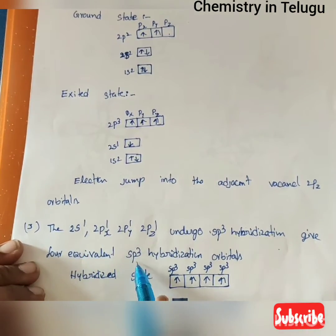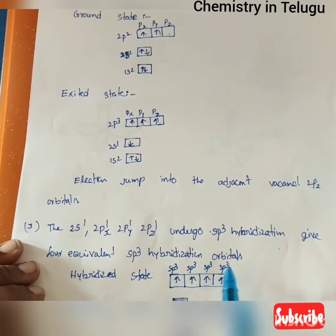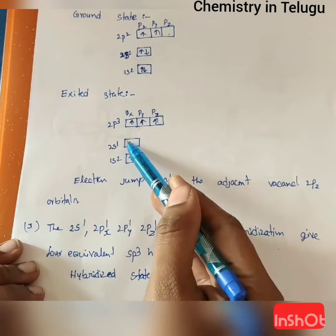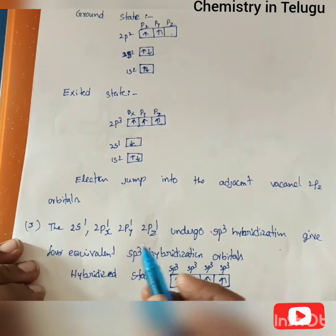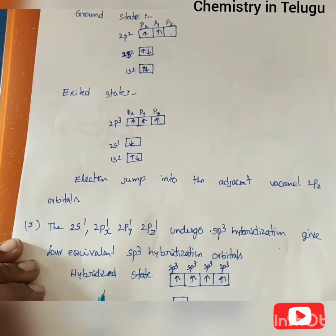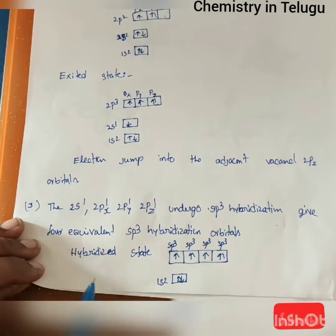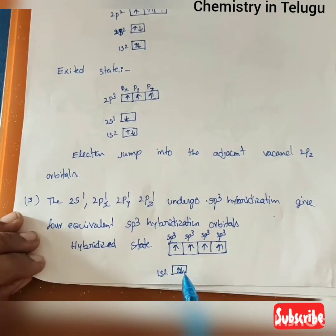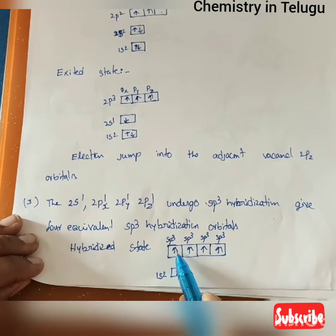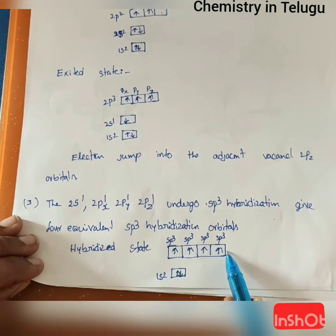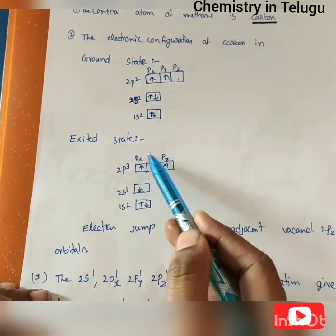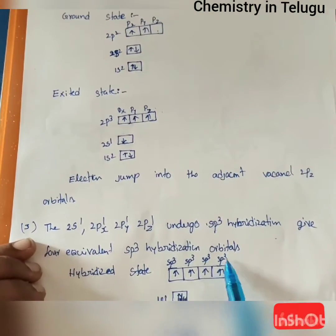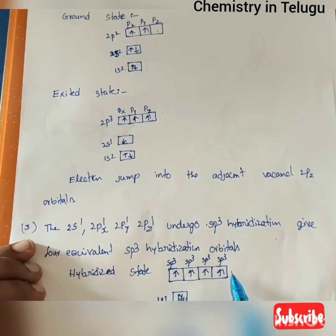This gives 4 equivalent SP3 hybridized orbitals. The 1 S orbital and 3 P orbitals combine to form 4 SP3 hybridized orbitals of equal shape and energy.